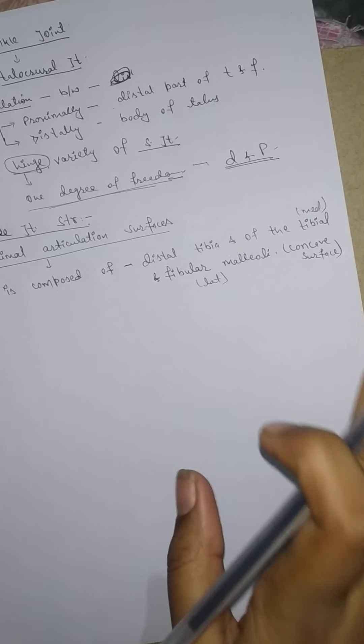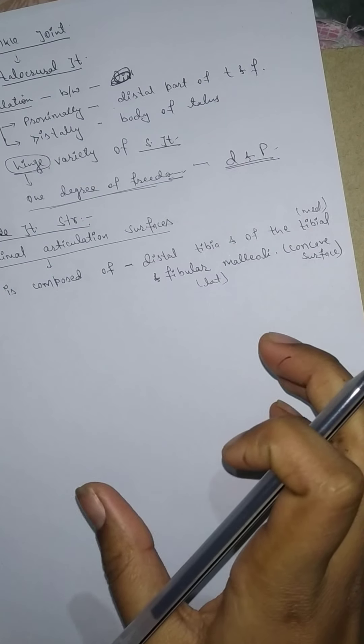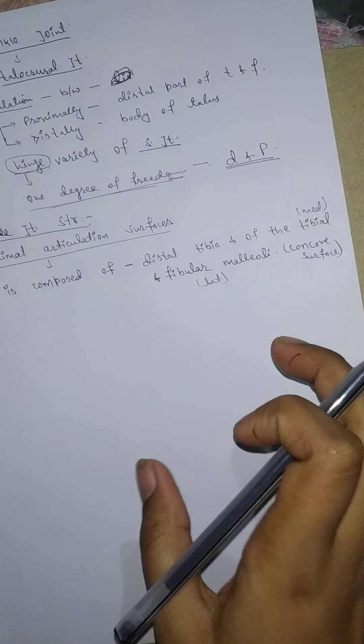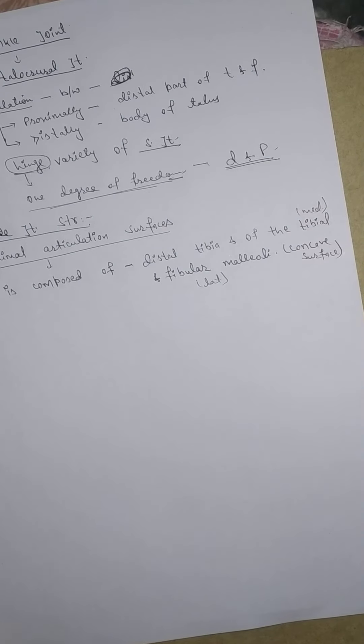These three facets form an almost continuous concave joint surface that extends more distally on the fibular side than on the tibial side, which is the medial side.